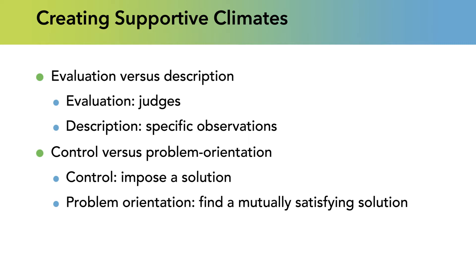The second pair is control versus problem orientation. With control, you impose a solution — 'turn off the TV and do the dishes.' Problem orientation is where you find a mutually satisfying solution, saying something like, 'I know you're watching TV, but I could use some help. Can you do the dishes? When we're done, we can both watch TV.'